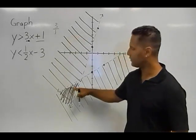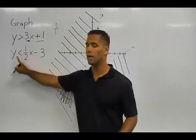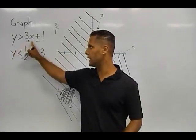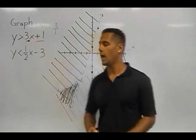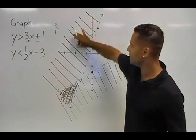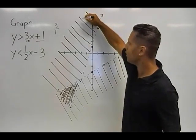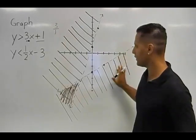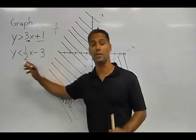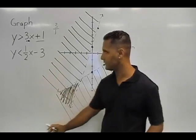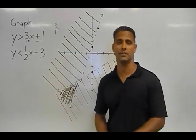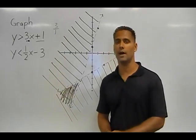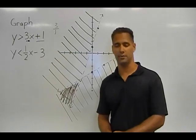So if I took a point at this location and plugged it in for our x and y here, it would be a true statement, as well as plugging it in for this inequality here. However, a point found in this shaded area, maybe right here, would only satisfy this inequality. And the shaded area here would satisfy only this inequality. But for the system, this area here would satisfy both inequalities. And that's basically how you find or graph a system of inequalities.